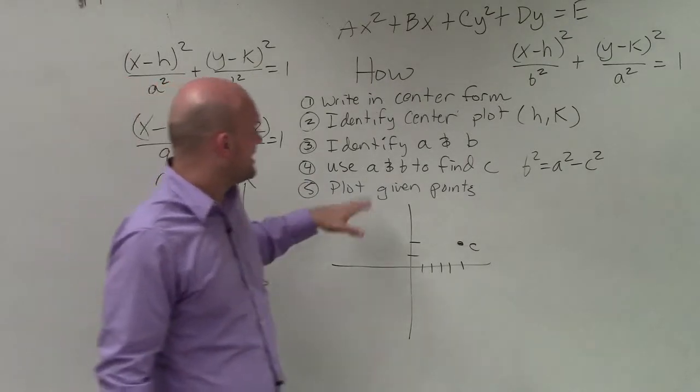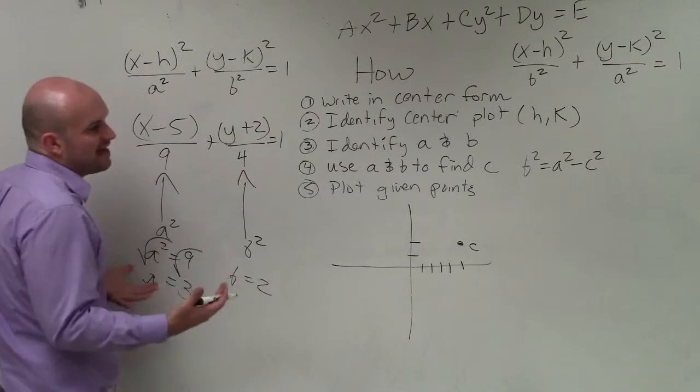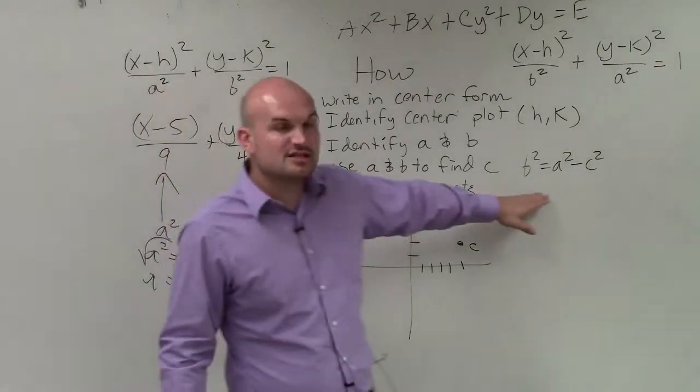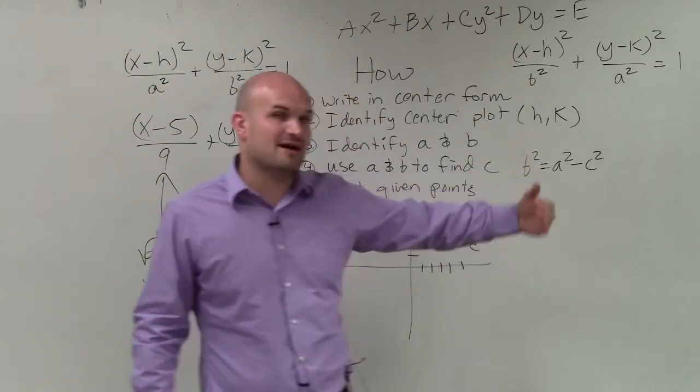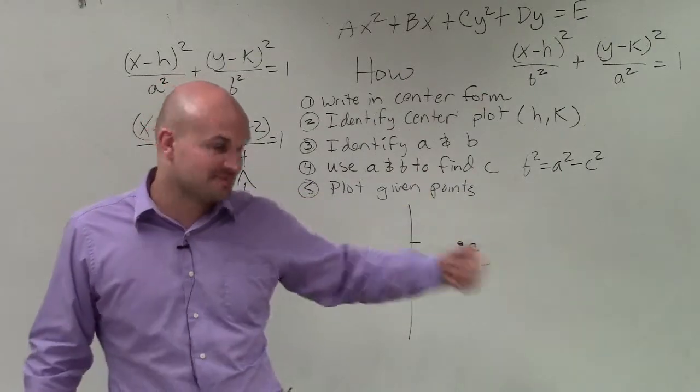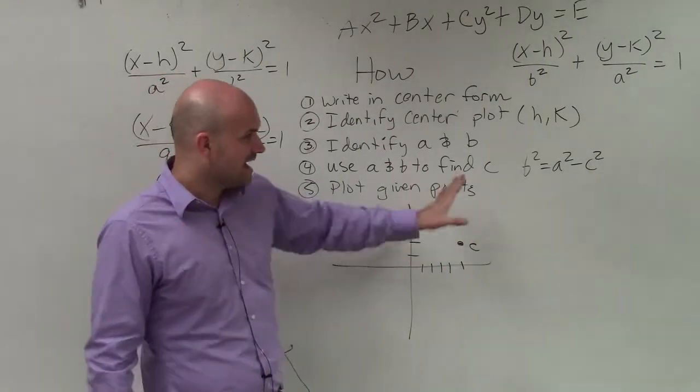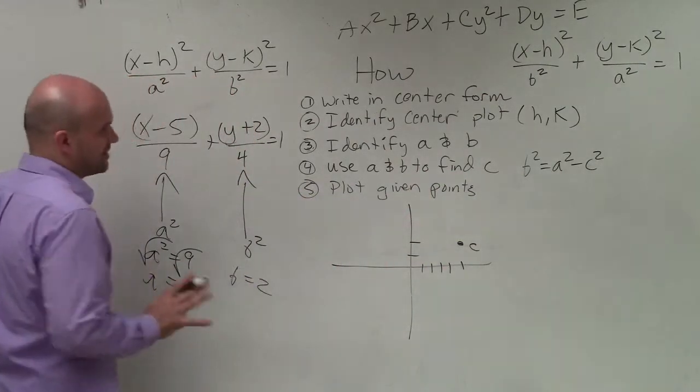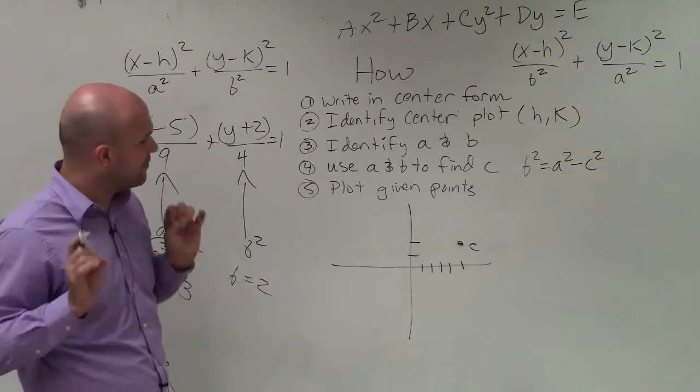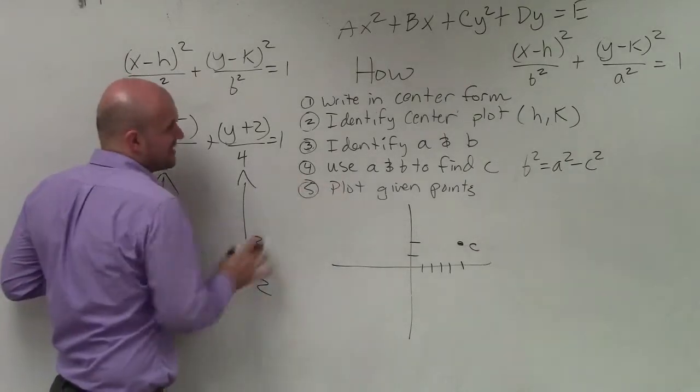And then I need to use my a and my b to find the value of c. So I can use this equation, which is the relationship between my values of a, b, and c for an ellipse. And I find my a, b, and c. And again, I don't want to go through this whole equation. But the main important thing I want to drive home is how we plot the given points.